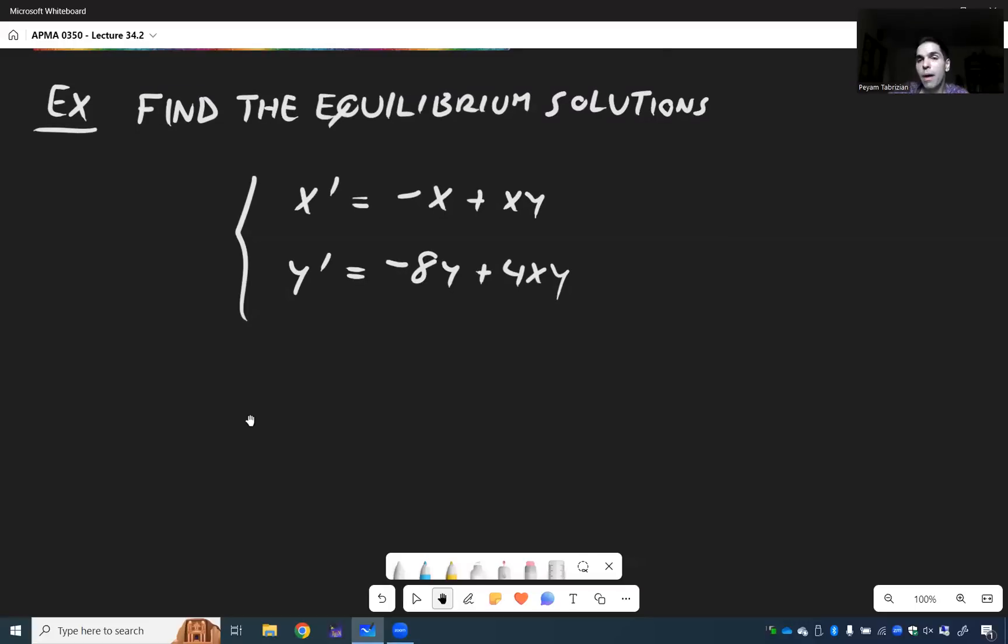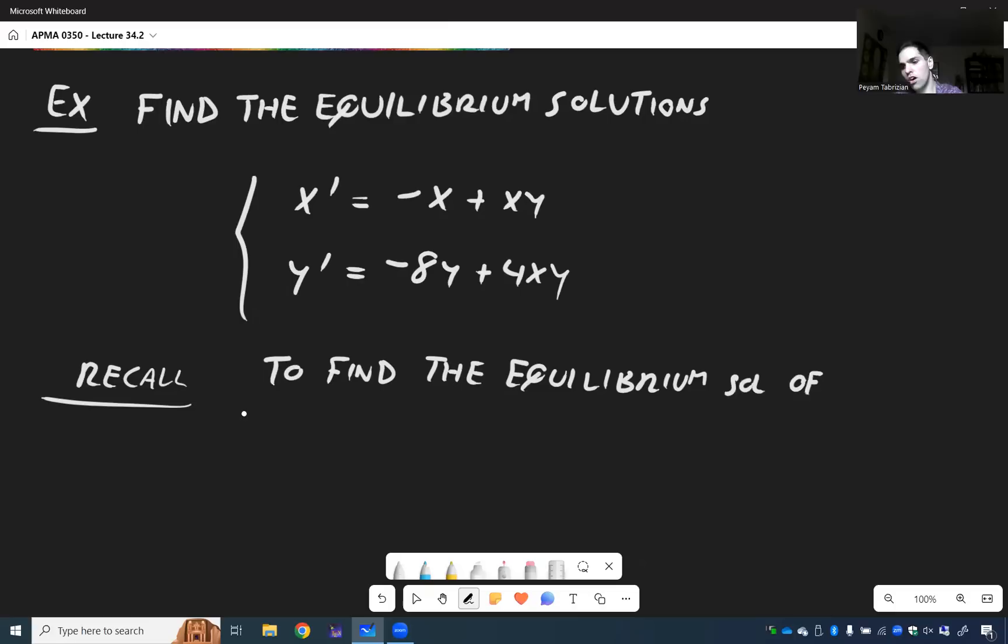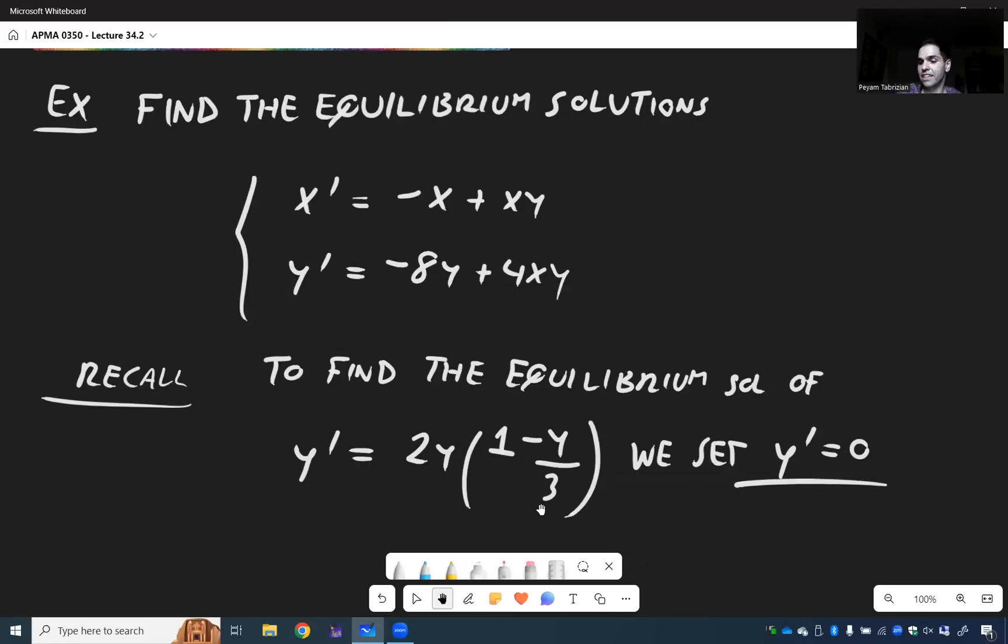And again, we just do it by analogy with first-order systems. So if you remember, from the beginning of the course, to find the equilibrium solutions of, let's say, the logistic equation y prime is 2y times 1 minus y over 3, we just set y prime equals 0. So in other words, this 2y times 1 minus y over 3, we set that equal to 0.